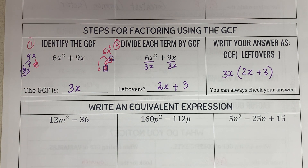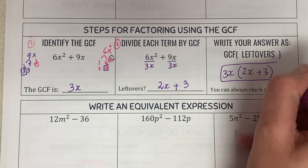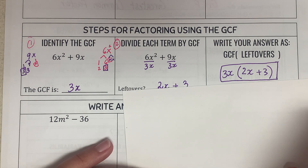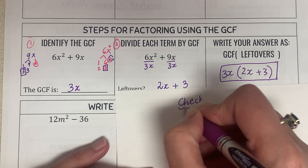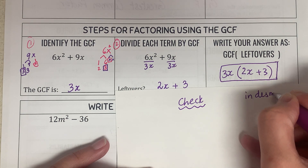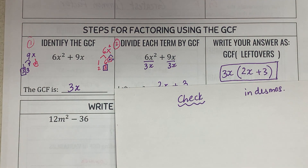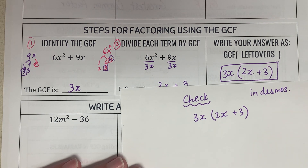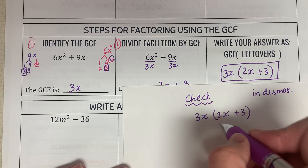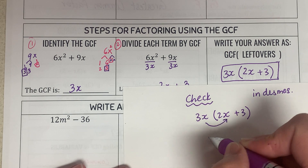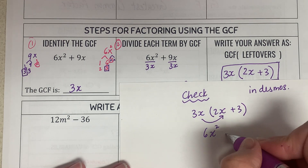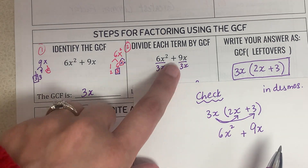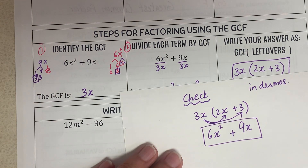To check the answer, you can distribute it back. 3x multiplied by 2x: 3 times 2 is 6, x times x is x squared. Plus 3x multiplied by 3 is 9x. That gives 6x squared plus 9x — which was the original question. You can also check by graphing both expressions in Desmos; they should overlap, confirming you're correct.